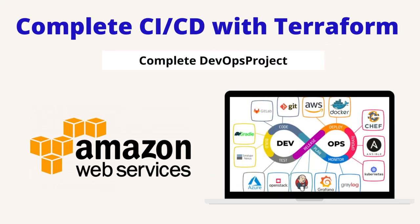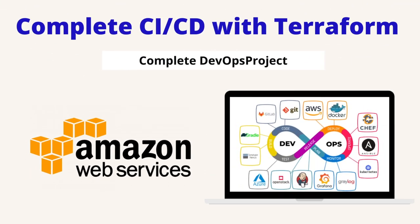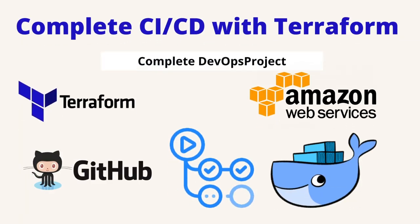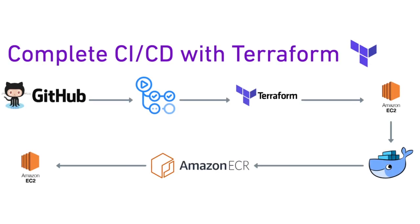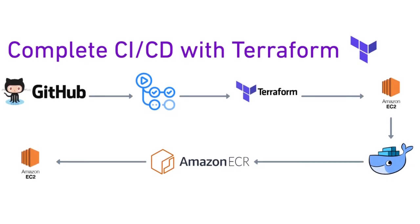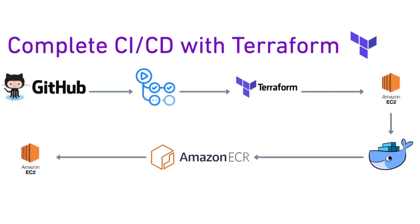Welcome to this new video. In this project we will be building a complete DevOps project using technologies like GitHub Actions, Terraform, AWS, and Docker. We will be deploying a sample application to Amazon EC2, provisioning an EC2 instance using Terraform, and deploying that sample application using Docker on that EC2 instance.